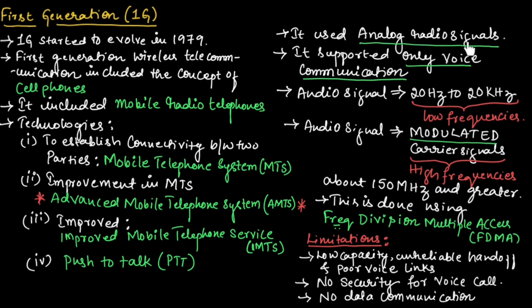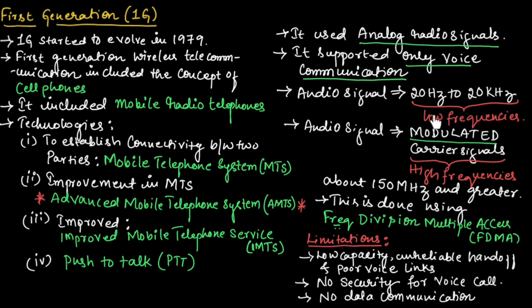The first generation used analog radio signals for communication between two parties. It supported only voice communication, which means there was no data communication in first generation. Since the first generation used audio signals, and we know audio signals range from 20 hertz to 20 kilohertz, these frequencies are known as low frequencies.